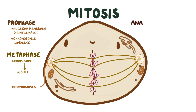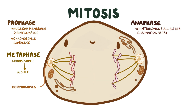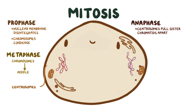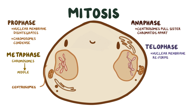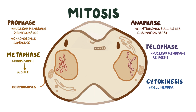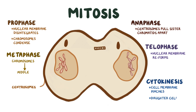Next, during anaphase, the centrosomes start pulling on the spindle fibers to pull the sister chromatids apart, like a game of tug-of-war. Since both centrosomes pull with equal force in opposite directions, eventually the sister chromatids separate and reach the opposite poles of the cell. Finally, there's telophase, during which a nuclear membrane forms around each new set of 46 single chromatid chromosomes. After that, during cytokinesis, the cell membrane pinches in until the two daughter cells separate.